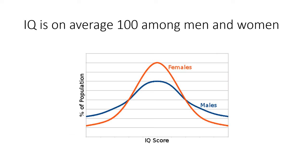The average IQ is the same for men and women — it's 100. Among women the average will be 100 and among men the average will be 100. But you will have more men at very high or very low intelligence, while women will cluster more toward average intelligence. There will be much fewer very high intelligence women and very low intelligence women.